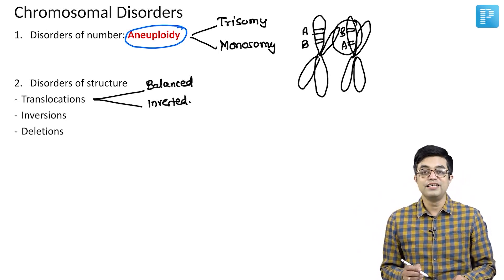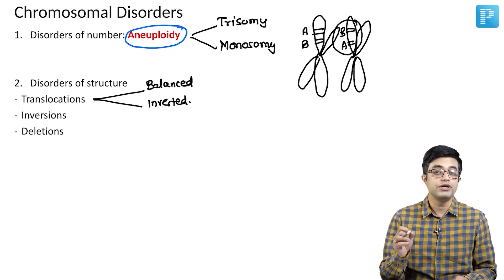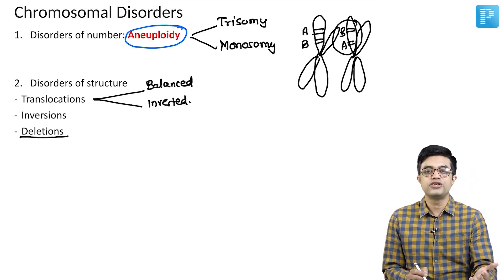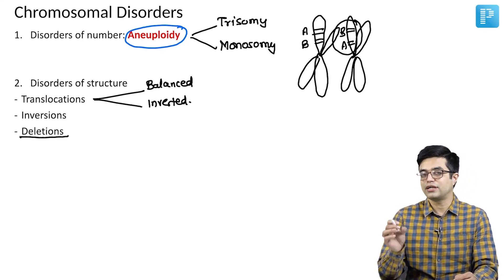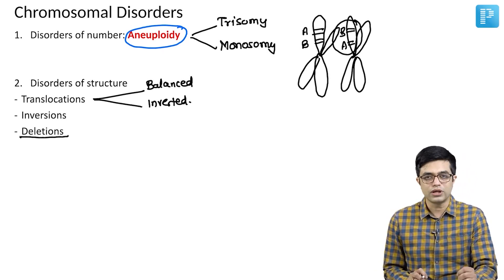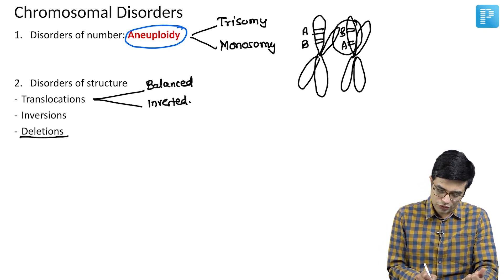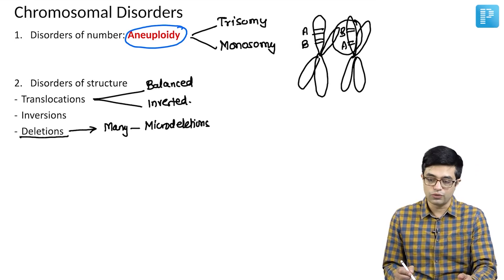Third is deletions. Deletions are very important and very frequently seen. Large gene deletions are incompatible with life, but micro-deletions occurring at specific chromosomal loci produce a lot of disorders. Many deletions that are compatible with life are micro-deletions, and accordingly we have micro-deletion syndromes.